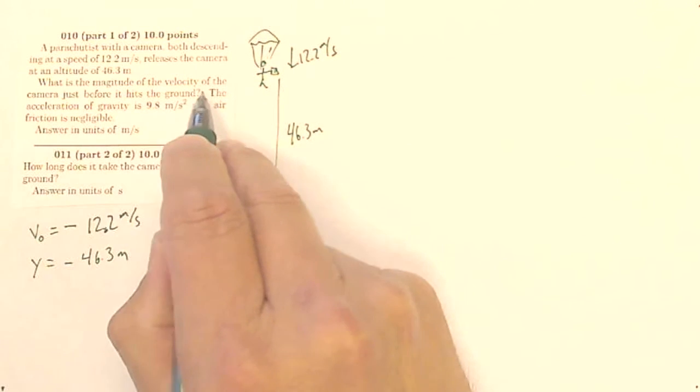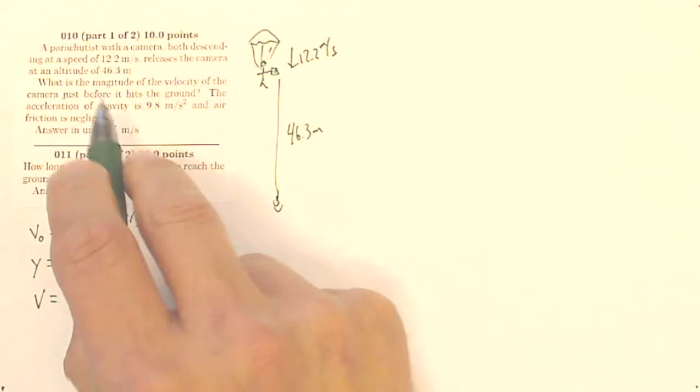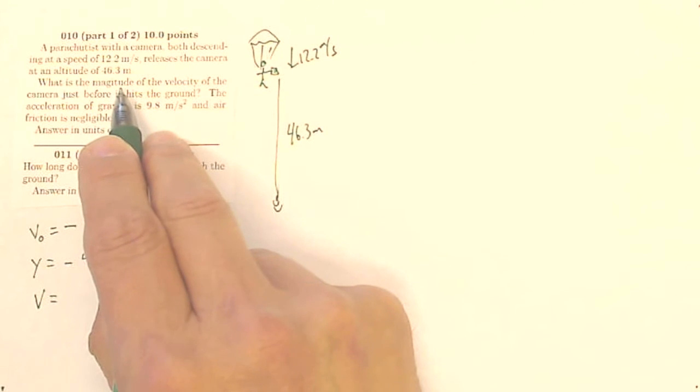What is the magnitude of the velocity of the camera just before it hits the ground? So I'm looking for a final velocity. But I want the magnitude, so I'm going to enter in positive, whatever this is, even if it's a negative value.